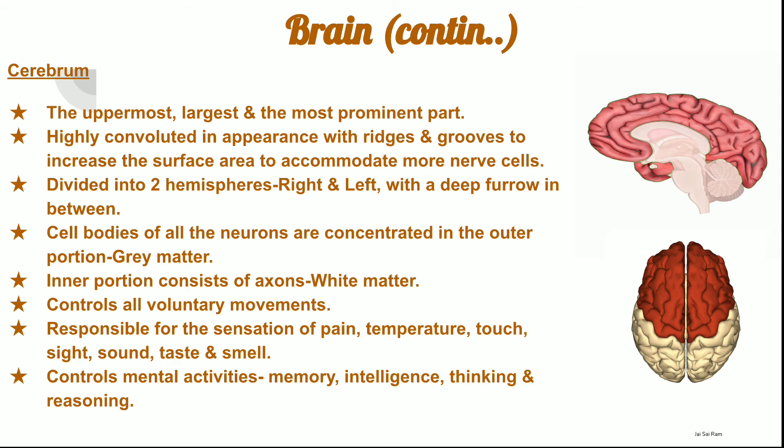The cerebrum controls all the voluntary movements of our body. It is responsible for the sensation of pain, temperature, touch, sight, sound, taste, smell, etc. It also controls mental activities like memory, intelligence, thinking, and reasoning.